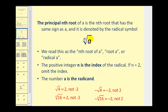Here's the idea behind the principal nth root. We know that four has two square roots, positive two and negative two. But using this notation, the principal square root is only equal to positive two. If we want the negative square root, we would use notation where we have a negative to the left of the square root. Similarly, the fourth root of 16 written this way is equal to two, not negative two. If we want the negative fourth root of 16, we would write it in this way.